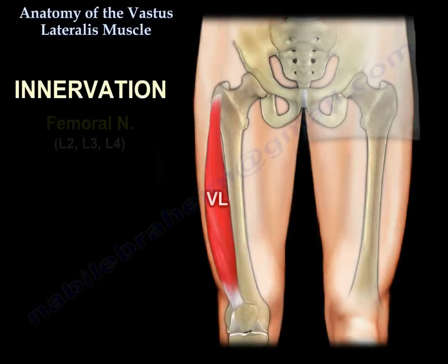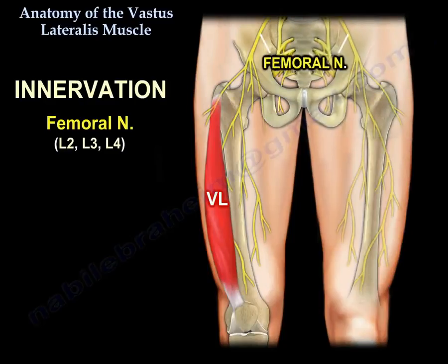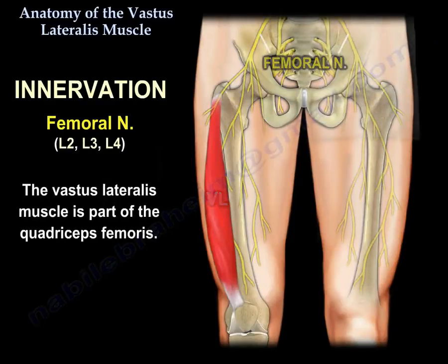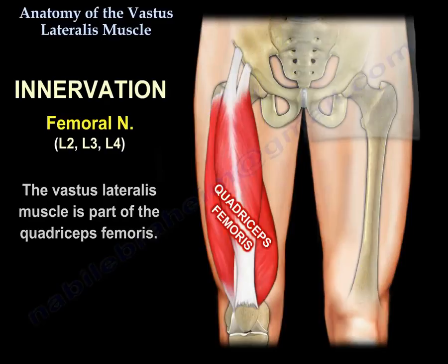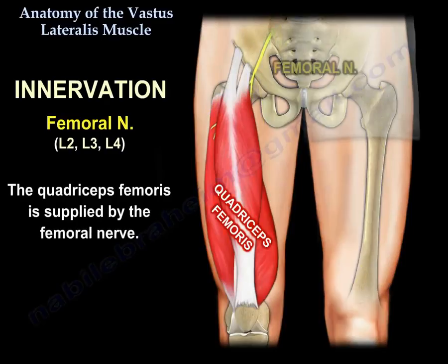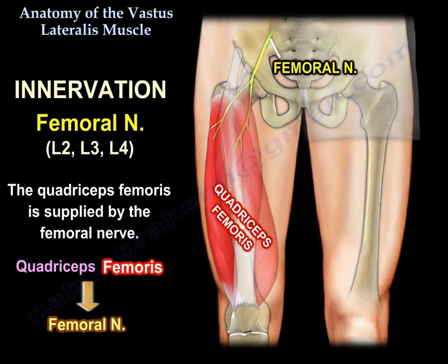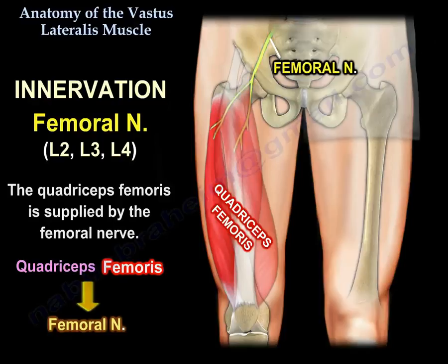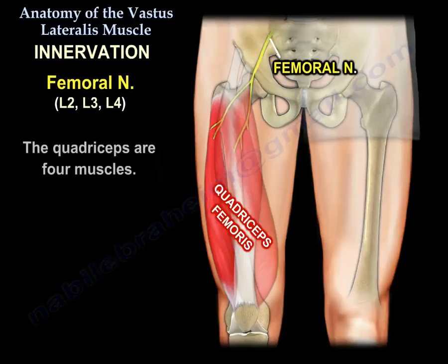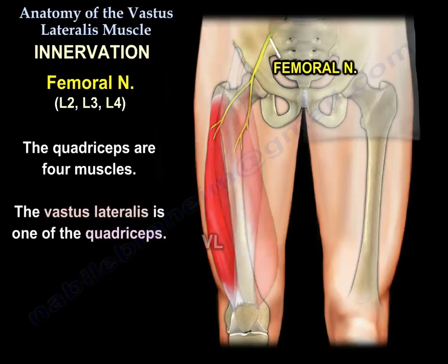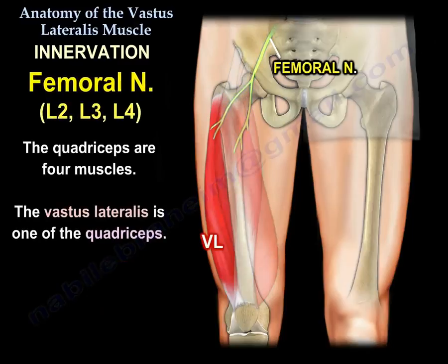Innervation: the Femoral Nerve. The Vastus Lateralis is part of the Quadriceps Femoris, which is supplied by the Femoral Nerve. The Femoral Nerve is L2, L3, and L4. So the Vastus Lateralis, being one muscle of the Quadriceps, is supplied by L2, 3, and 4.